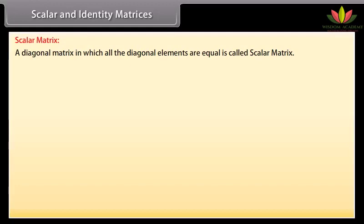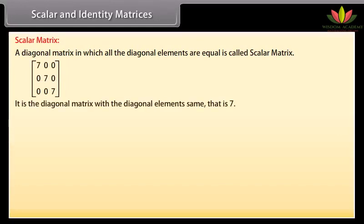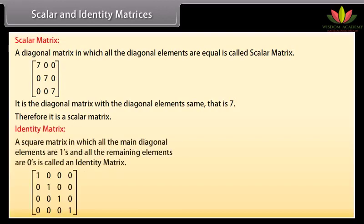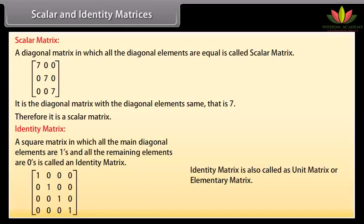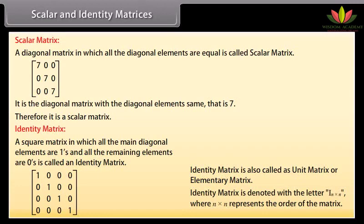Scalar and identity matrix. Scalar matrix: a diagonal matrix in which all the diagonal elements are equal is called a scalar matrix. For example, a diagonal matrix with all diagonal elements equal to 7 is a scalar matrix. Identity matrix: a square matrix in which all the main diagonal elements are ones and all remaining elements are zeros is called an identity matrix. It is also called a unit matrix or elementary matrix, and is denoted as Iₙ where n by n represents the order of the matrix.